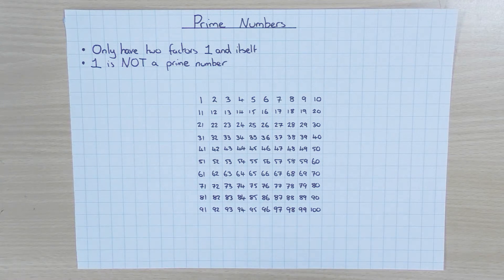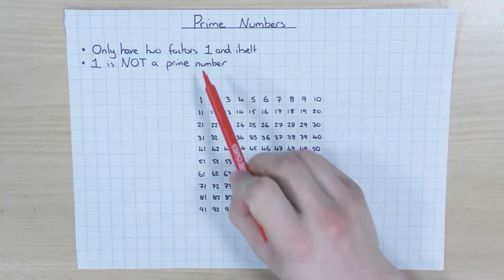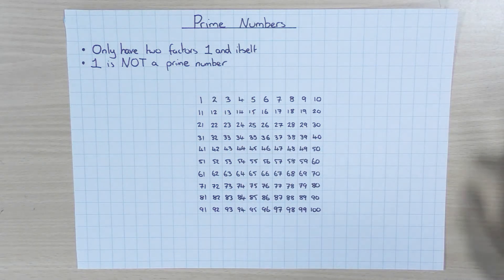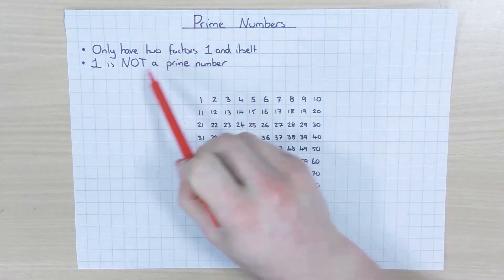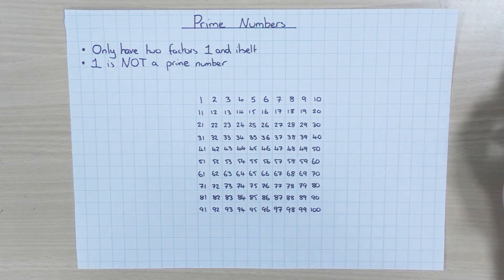So the first thing we need to have a look at is what is a prime number. A prime number only has two factors: one and itself. If you're unsure what a factor is, you can have a look at my factors video. But that's what makes it a prime number — it has only two factors, one and itself.